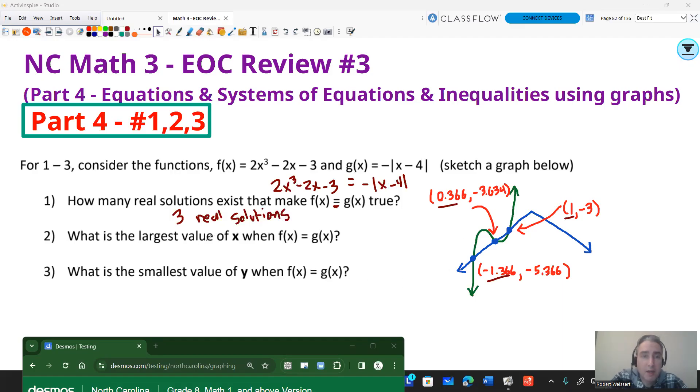And I have them listed out here. So the question says, what's the largest value of x? So all my x values, I have -1.366, 0.366, and 1. That's my largest x. So that's going to be just 1, the largest x.